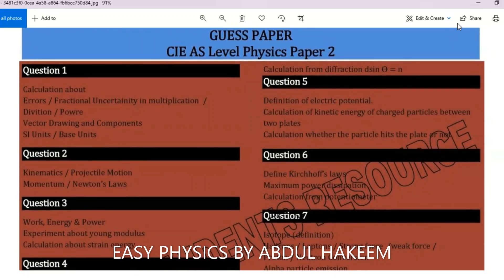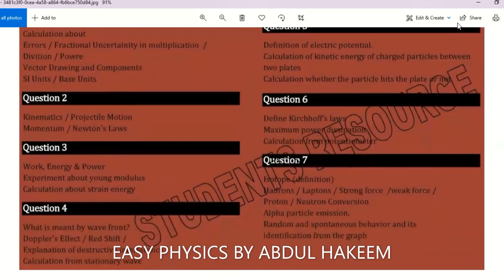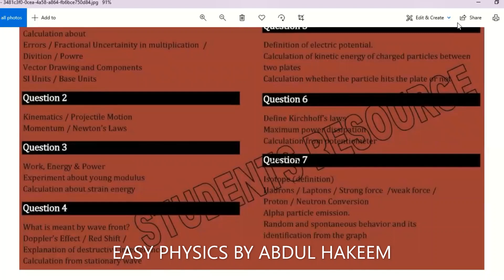The kinetic energy or work done between two points on the charge, especially the electron. Calculate whether the particle will hit the plate - we have discussed this. Define Kirchhoff's law, maximum power theorem, calculation of the resistance, calculation of the power and the energy.